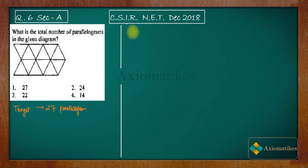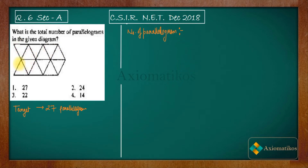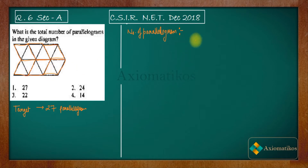Let us begin by identifying parallelograms. The first parallelogram is this one, and the same parallelogram appears here — so you get three parallelograms in this way. The same three parallelograms will lie in the other section as well. So you have three plus three — six parallelograms in this orientation.